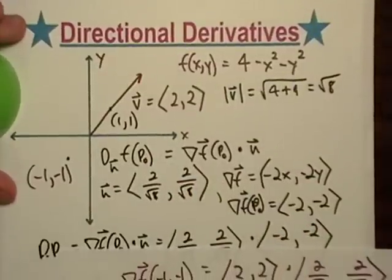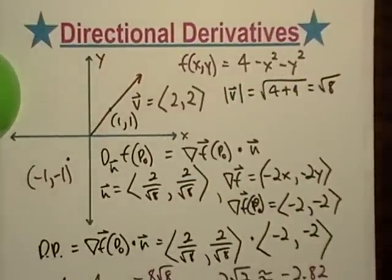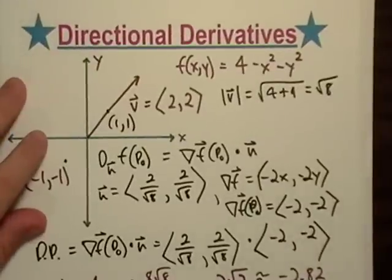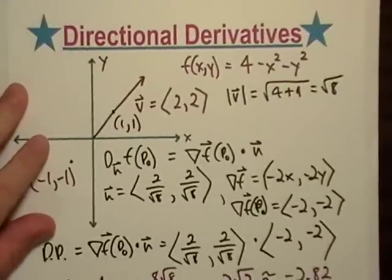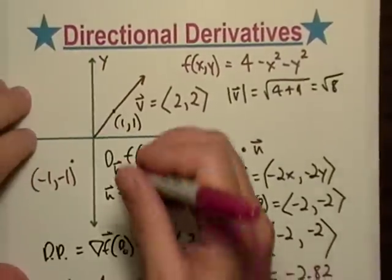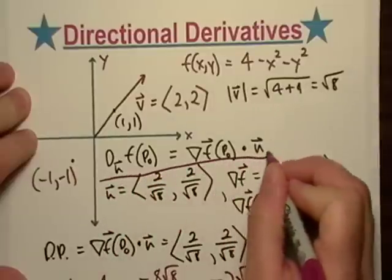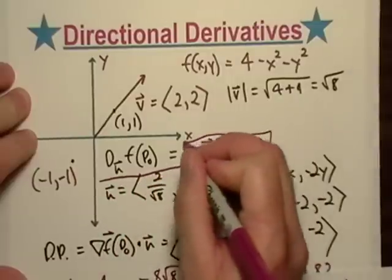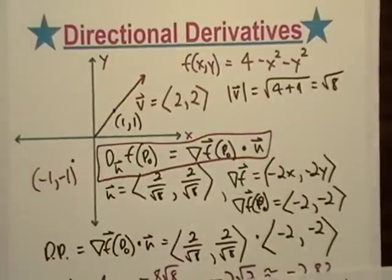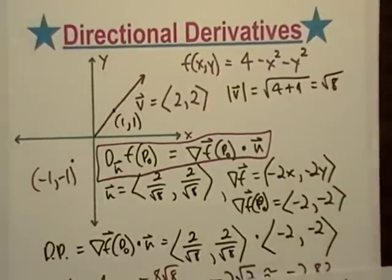Hopefully that was clear. It's not too tough to find a directional derivative, really. It got a bit jumbled here, but that's all you need to know: you just take the unit vector, dot it with the gradient, and you've got yourself a directional derivative.